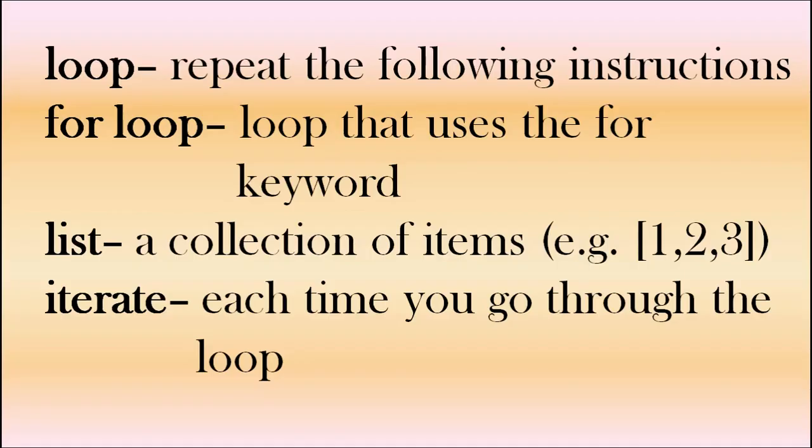Okay, just to clear up some terms. A loop just repeats the following instructions. A for loop is a loop that uses the for keyword. A list, like a list of numbers, is a collection of items. Could be numbers, floats, strings, even other lists.